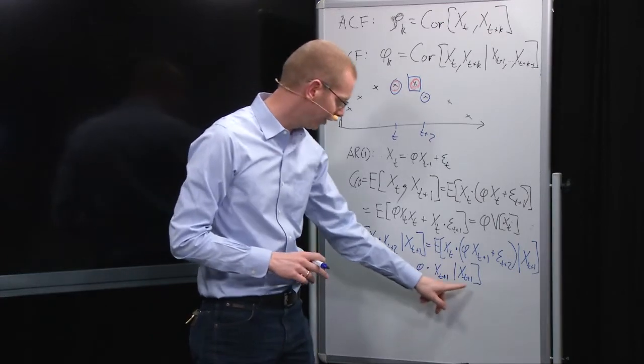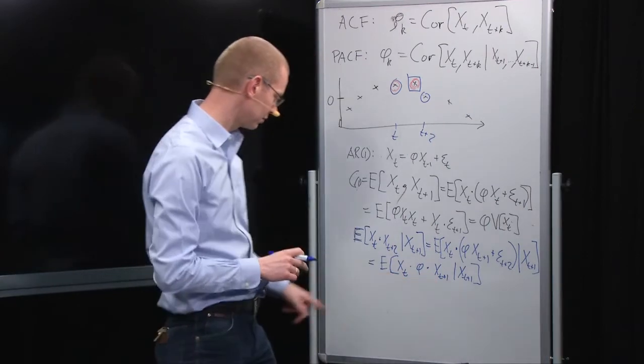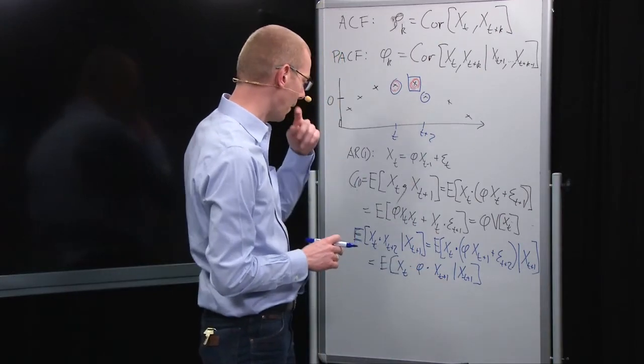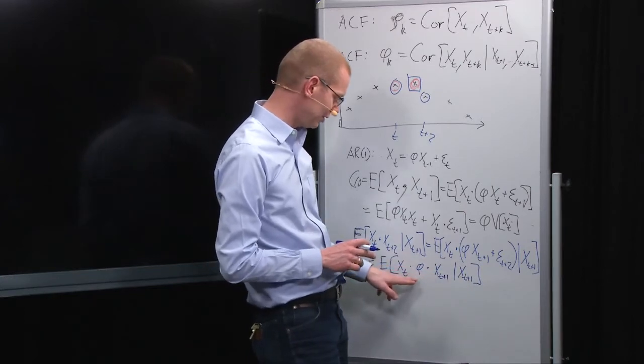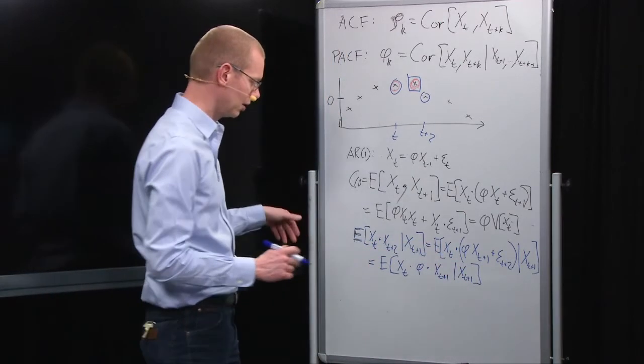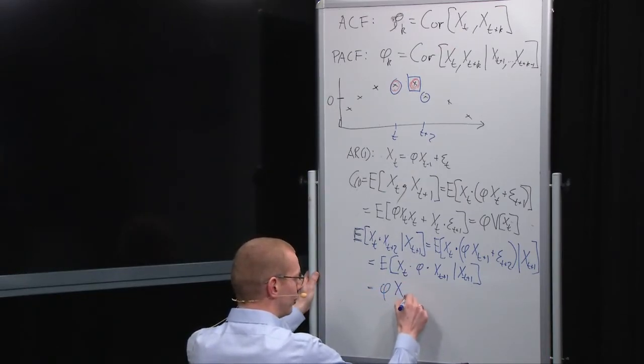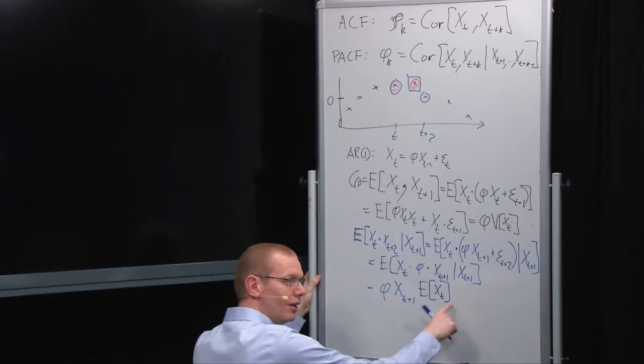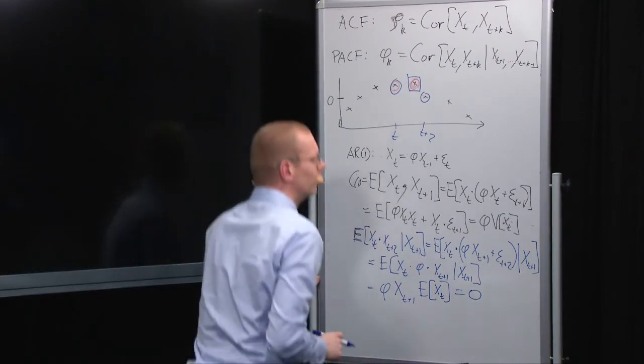Now, this becomes a random variable, and what we see here is that given that we know this, given that we know this one here, what happens? Well, the expectation, that becomes constant, it goes outside, so we can move the constant outside, so we get phi, the random variable x t plus 1, times the expectation of x t. This expectation is the mean value, and the mean value was said to be 0.